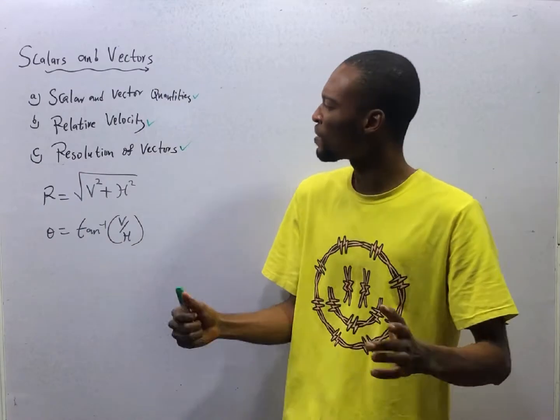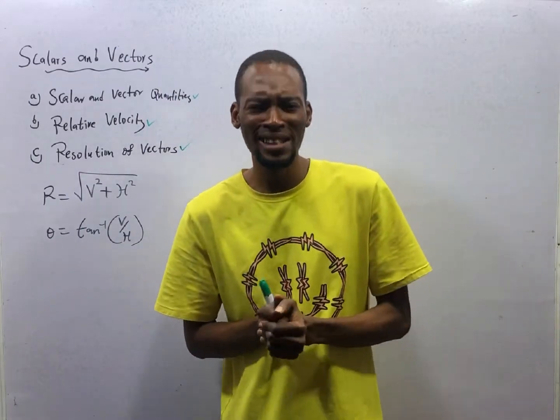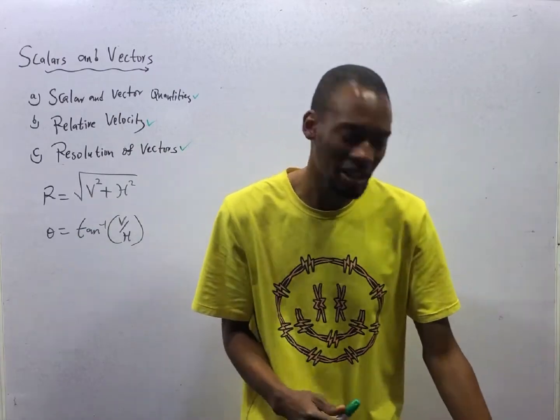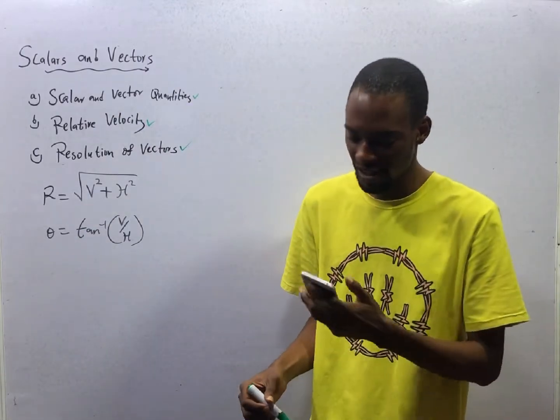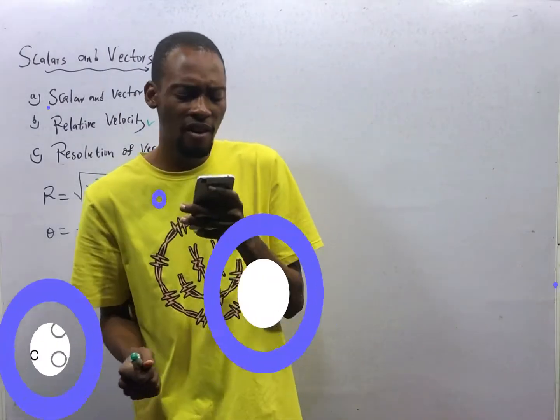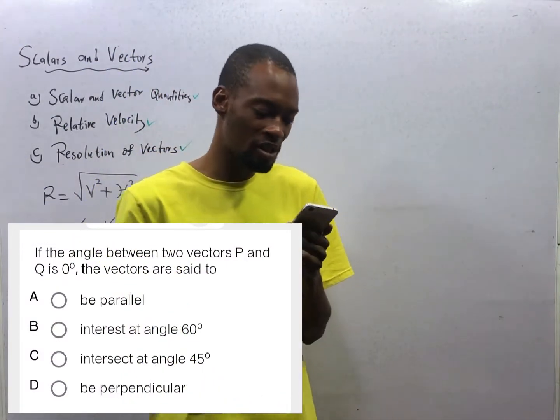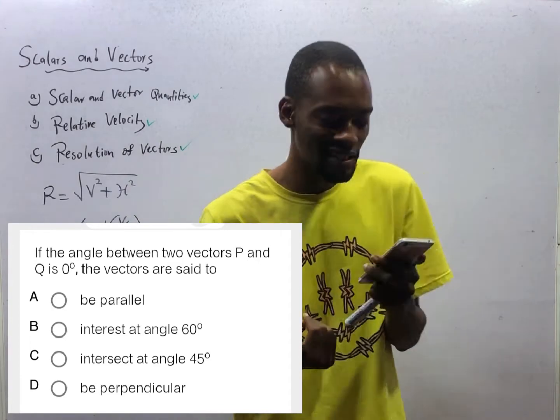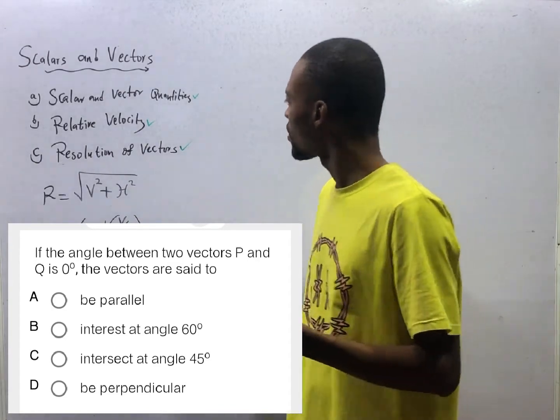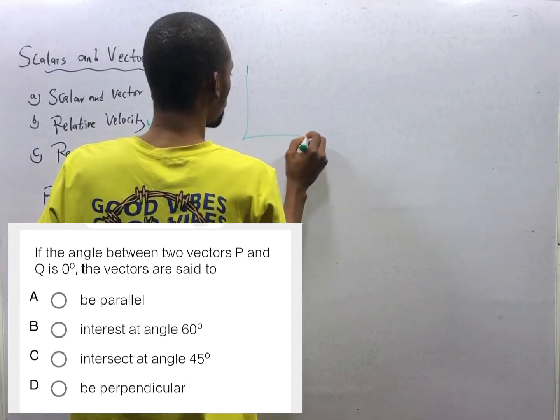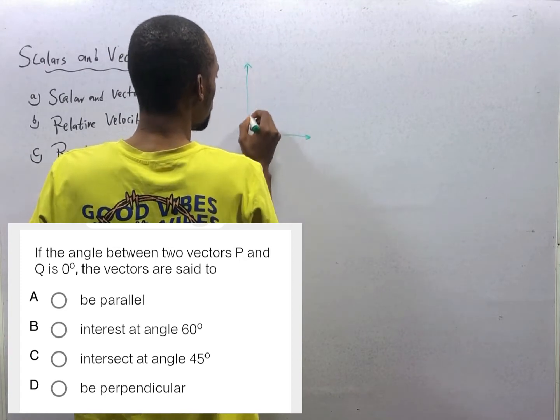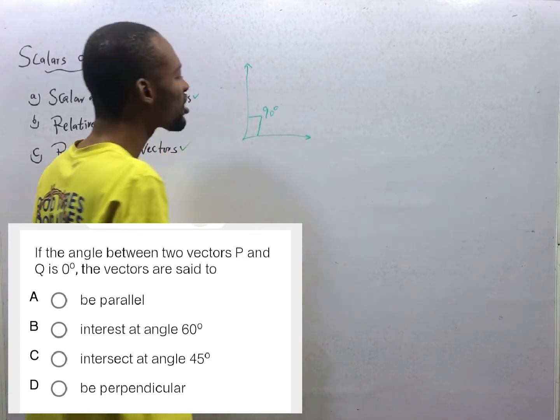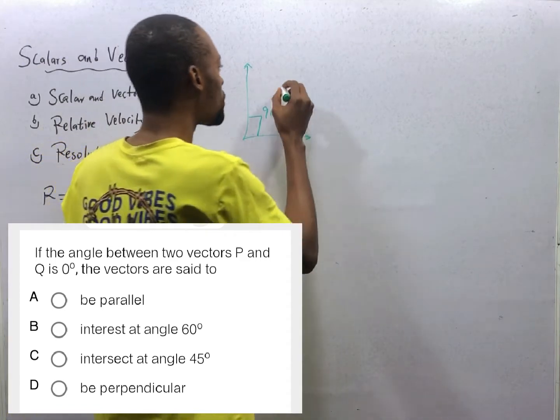Hello, this is episode number 14 of the 120 Days to Jump Physics with Flash Isaac. The resolution of vectors continues. If the angle between two vectors P and Q is 0 degrees, the vectors are said to be dash. If the angle between two vectors is 90 degrees, the vectors are said to be perpendicular.